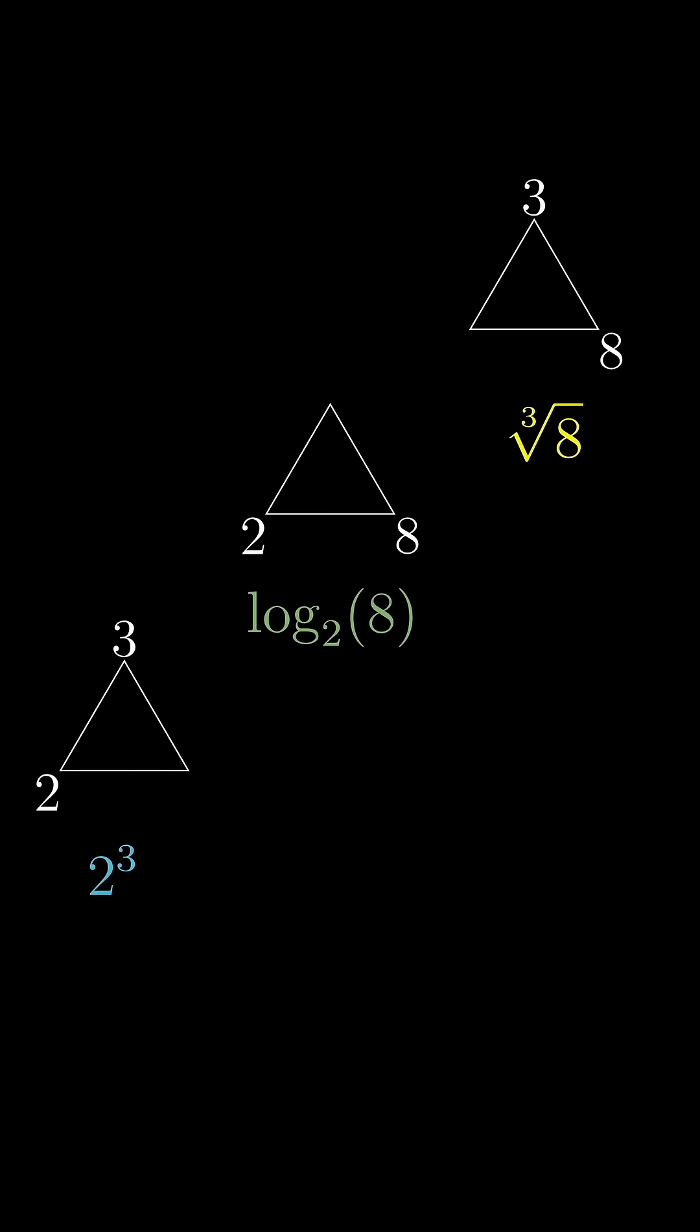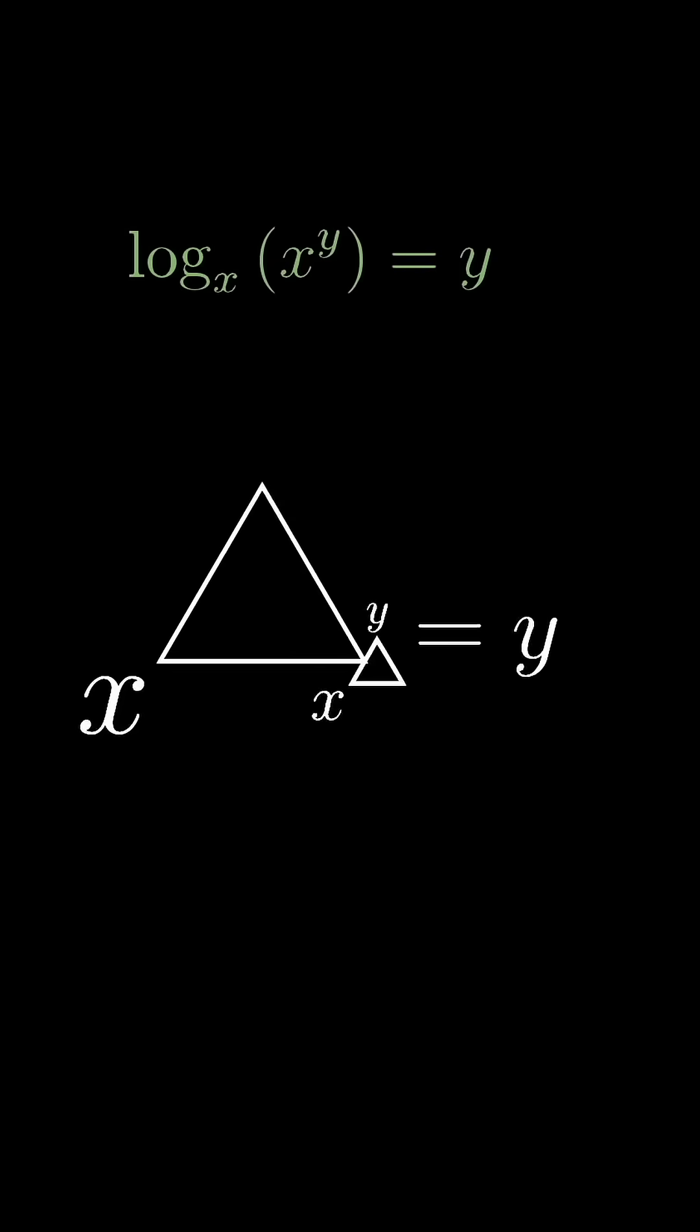The definition alone is mildly pleasing, but where it becomes useful is in seeing how the rules for exponentiation, logs, and radicals are all really the same. The most extreme example might be how with our current notation, there are 6 distinct ways to express the various inverse operations, and it looks like a complete mess. If you use the triangle of power, all of these operations follow the same basic aesthetic pattern.